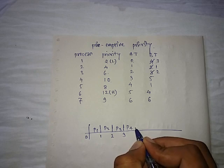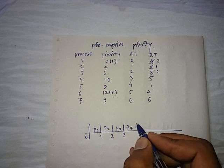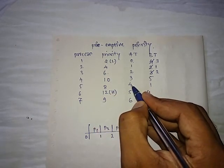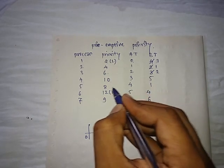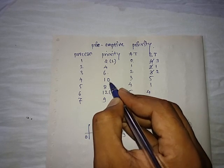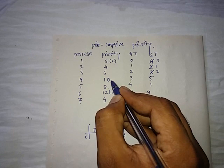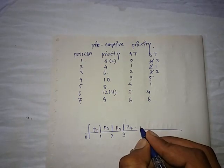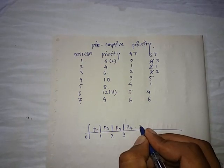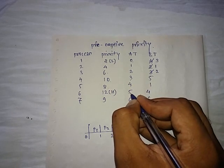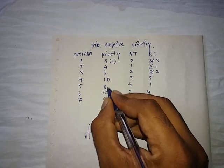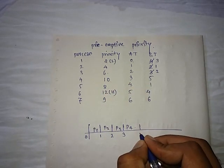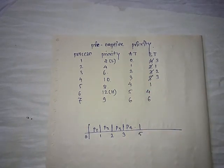For P4, we again check how long to run it. The next job arrives at time 4 with priority 8, which is lower than our currently running P4, so we can continue P4. The next job after that arrives at time 5 with a higher priority than P4 — that means we schedule P4 for 2 time units: 3 plus 2 becomes 5. P4's remaining burst time becomes 3.